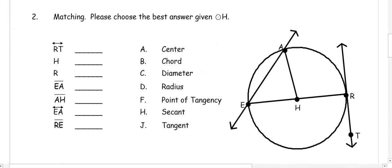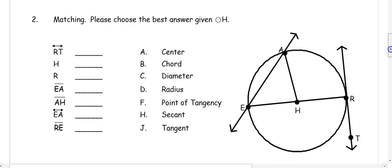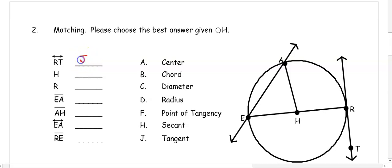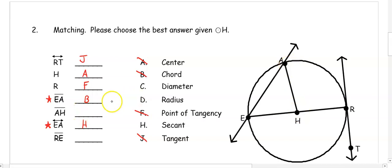For number two, let's match the following. RT has arrows and only touches the circle once, so that is our tangent line — letter J. H is the point at the center of the circle, so it's the center. R is the point where the tangent line touches the circle, so it's the point of tangency. Segment EA starts at A and ends at E, so that is a chord — different from line EA with arrows, which goes on forever and is our secant. AH goes from the center to the circle, so that's our radius, which means RE is our diameter because it goes across the circle through the center.